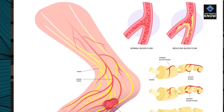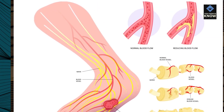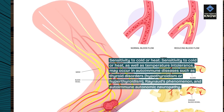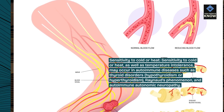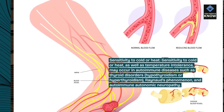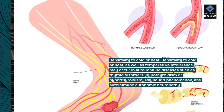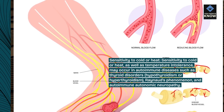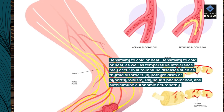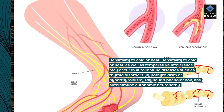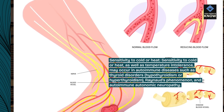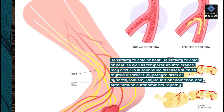Sensitivity to cold or heat: sensitivity to cold or heat, as well as temperature intolerance, may occur in autoimmune diseases such as thyroid disorders (hypothyroidism or hyperthyroidism), Raynaud's phenomenon, and autoimmune autonomic neuropathy.